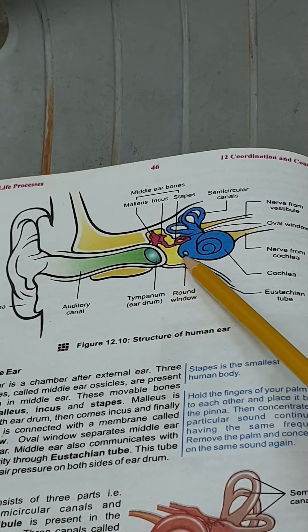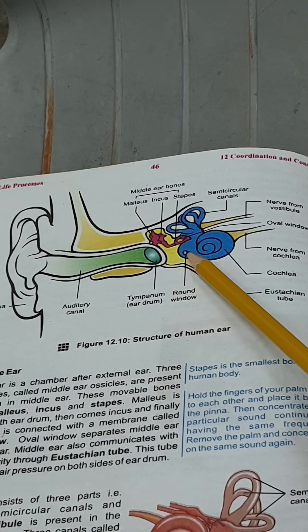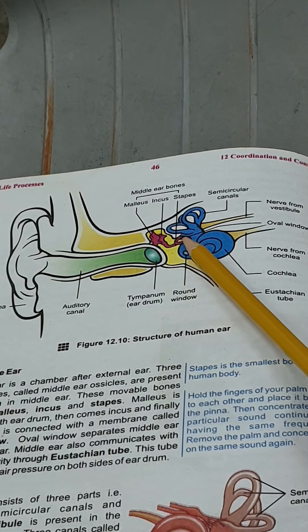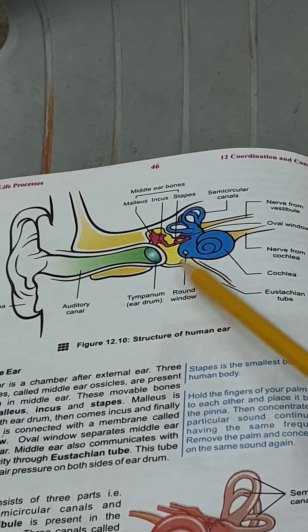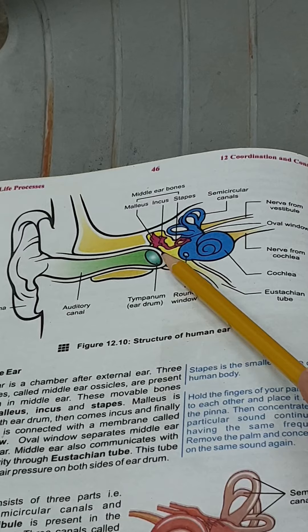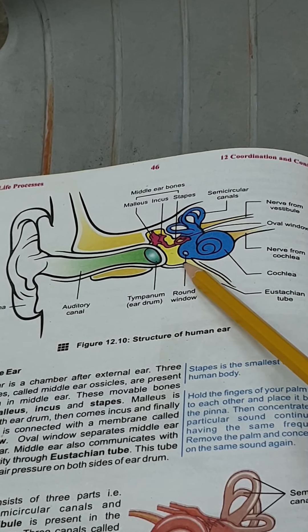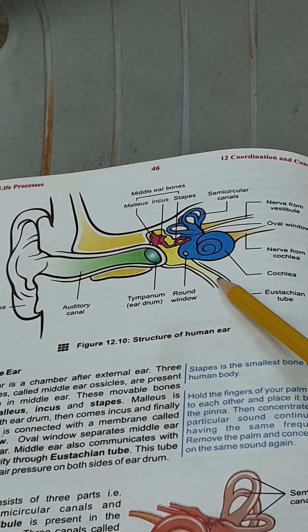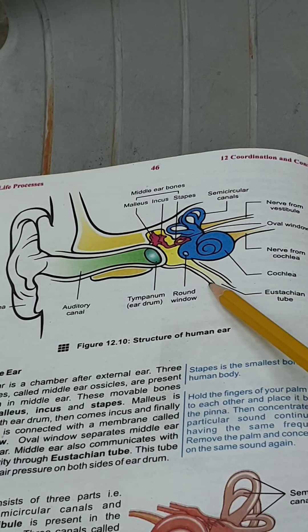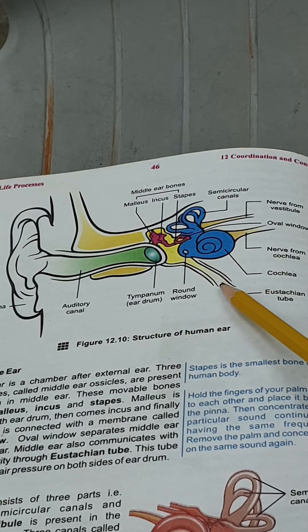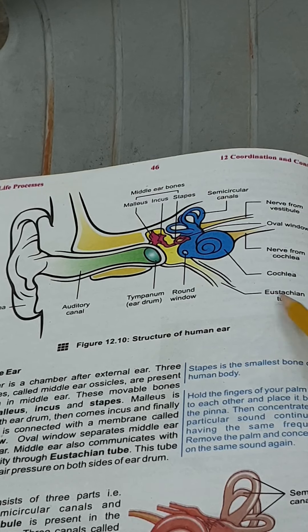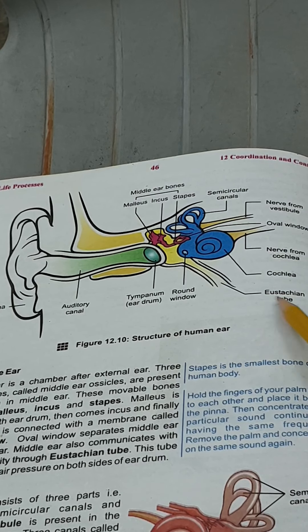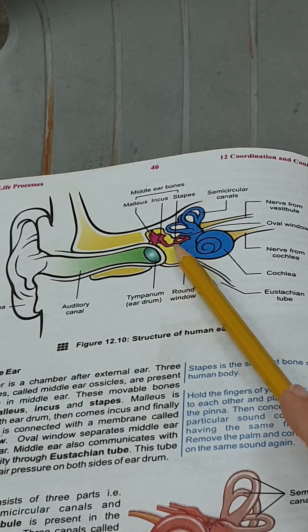Here we also have a special window or membrane known as round window or oval window, and this separates the middle ear from the inner ear. A tube is also connected which connects our ear to our mouth, known as the Eustachian tube, and it controls or regulates the pressure of the ear and the mouth.